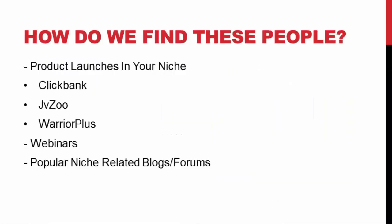So how do you find people with a huge email list in your niche? There are multiple ways. Product launches — every niche has people launching information products. You can head over to ClickBank.com, JVZoo, Warrior Plus, or any affiliate network and search for products in your niche. ClickBank especially has products in every single niche. Contact those people with successful products and see what it would take for them to send out your email. You can also find people doing webinars — webinars are really hot right now — or find blogs and forums related to your niche and reach out to those people.